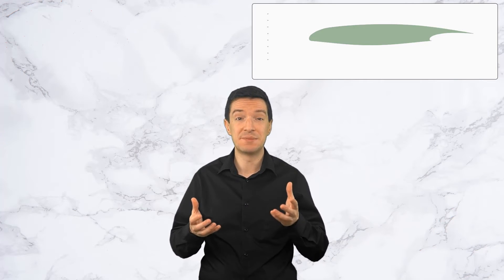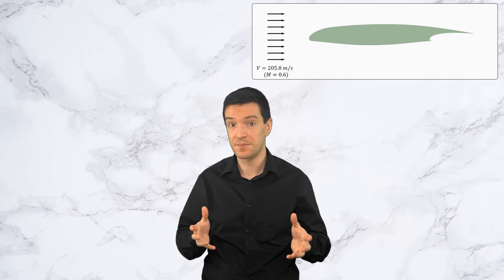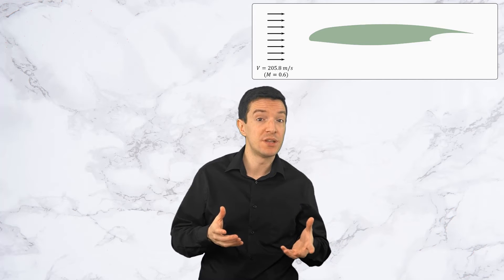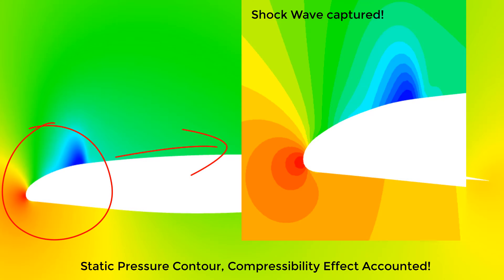Consider the flow of air over an airfoil at speed of approximately 200 meters per second. Using CFD simulations, we can easily compute the flow field around the airfoil. If we look at the contours of static pressure, we can see that pressure varies quite substantially throughout the domain. We can also notice the formation of a shockwave on the top surface of the airfoil, through which pressure dramatically increases.